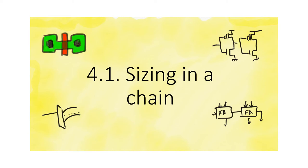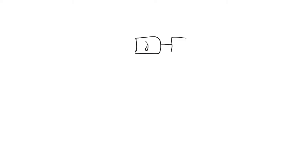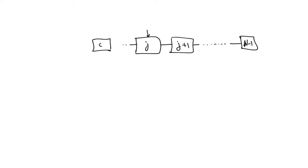In Module 4, our main objective is to size gates that lie in a meaningful chain of logic rather than isolated on their own. The problem we are dealing with is a chain of logic where a specific logic gate j drives another logic gate j-1, all within a big chain containing n gates numbered from 0 to n-1. The question is: what is the delay of stage j, and how do we minimize it? How do we size stage j?